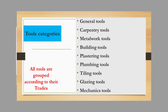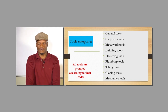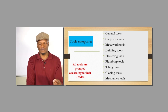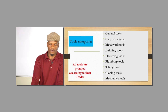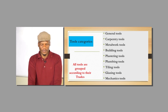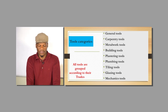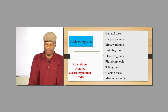The ninth category is going to be the general tools. General tools are each and every tool that can be used by most of the tradesmen. You can be a carpenter, metal worker, builder, plasterer, plumber, tiler, glazier, or mechanic — you must know exactly which tools you need in your workshop to carry out activities in your specific trade.